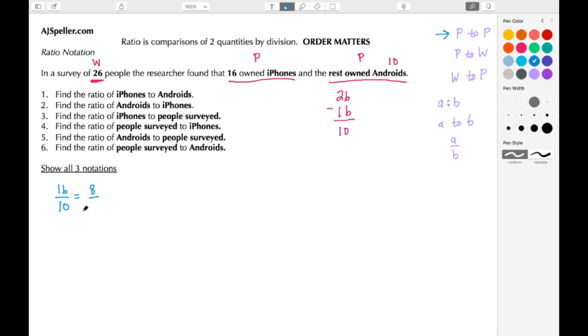So 8 fifths is one form, another form is 8 colon 5, and the last form is 8 to 5. So these are the three ways to represent eight fifths using the three different ratio notations. And this here is number one. Let's go ahead and do number two.